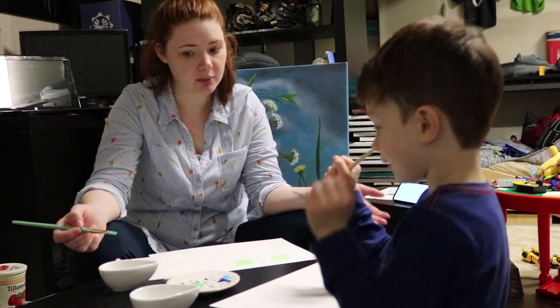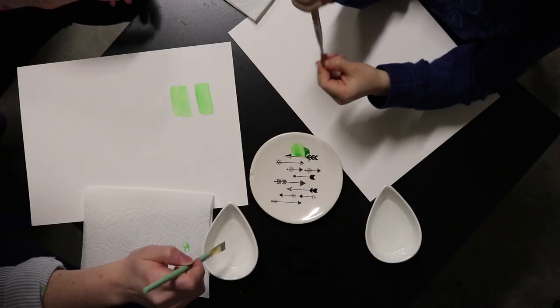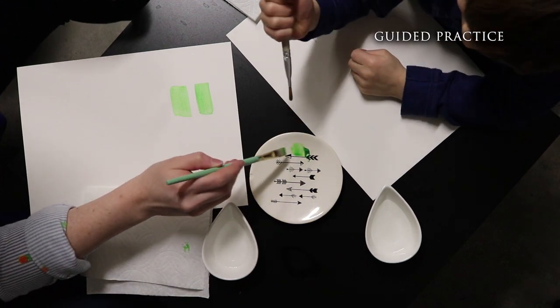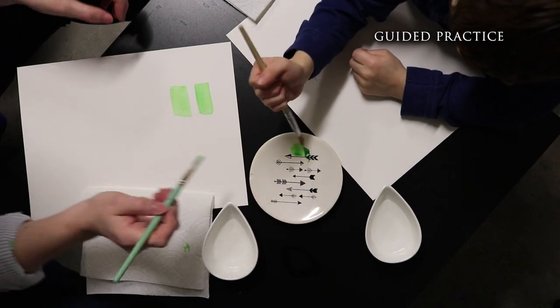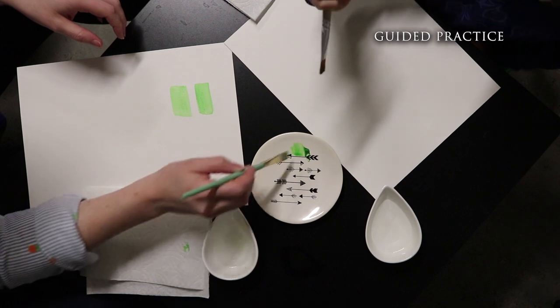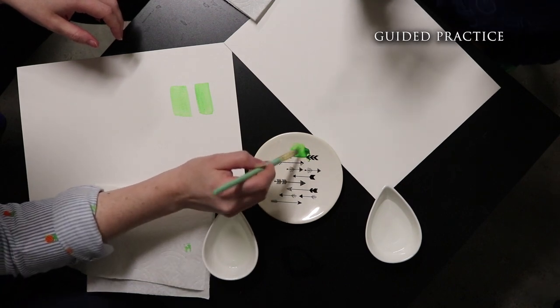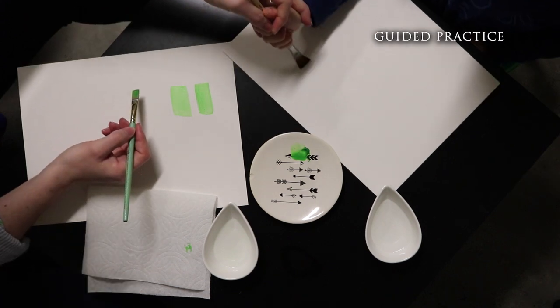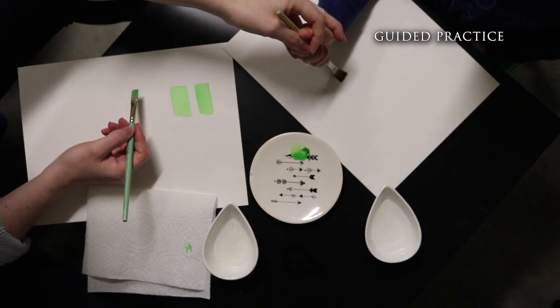So go ahead and try it. Take your paint brush with no paint on it, and you're going to pretend to dip it in the water. And then pretend to get a little bit of paint. And now put it on your paper. And I'm going to do it again to show you. You want smooth movements. There you go.